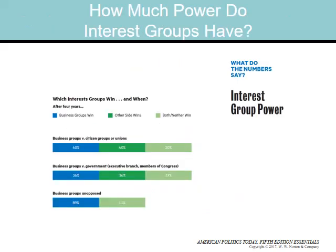Conventional wisdom says that business interest groups have too much power over policy outcomes in Washington. A group of political scientists tracked a series of issues through years of lobbying, congressional debate, legislative action, and bureaucratic implementation to determine whether business groups were successful in getting what they want, particularly when opposed by citizen groups or government officials. Business groups versus citizen groups or unions: business groups win about 40% of the time, citizen groups win about 40% of the time, and neither wins about 20% of the time.